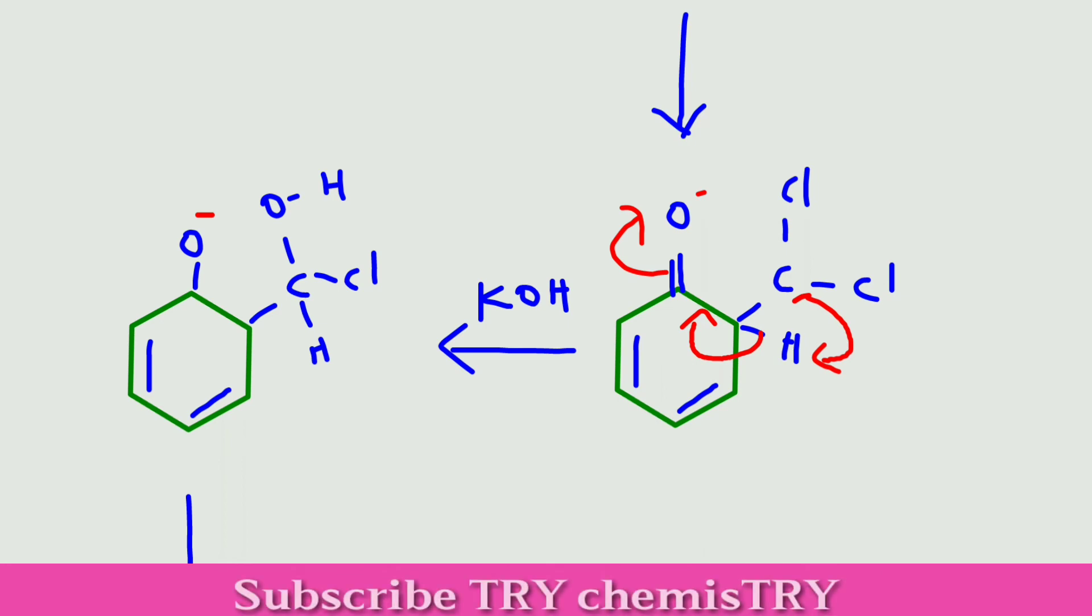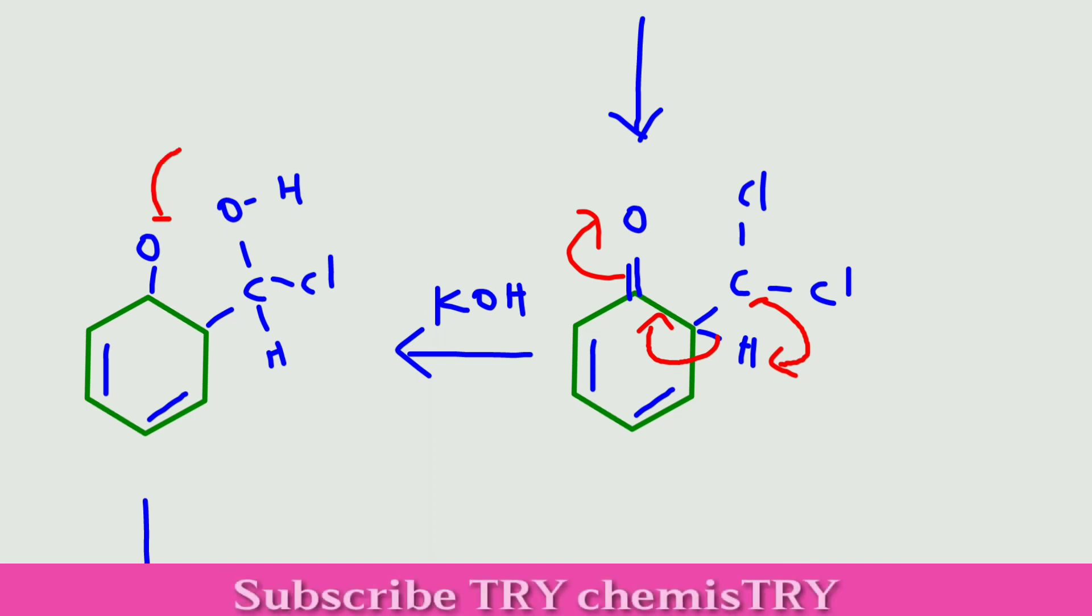In the next step, one more potassium hydroxide reacts with this compound. Oxygen donates the electron to hydrogen, meaning the oxygen bonds with hydrogen. The oxygen-hydrogen bond will break and it donates the electron.